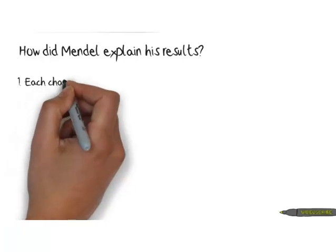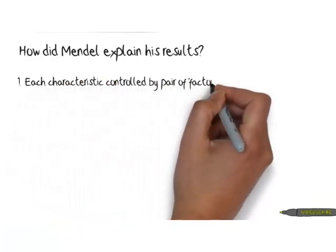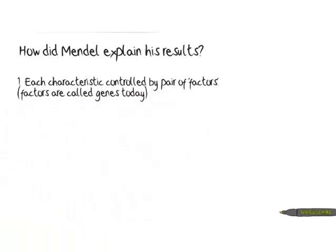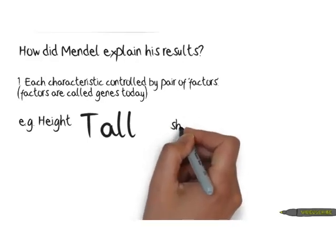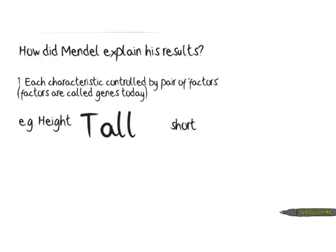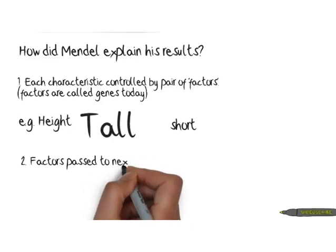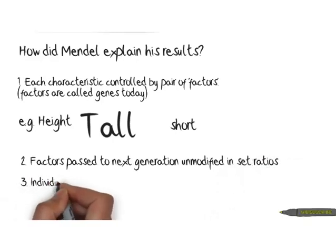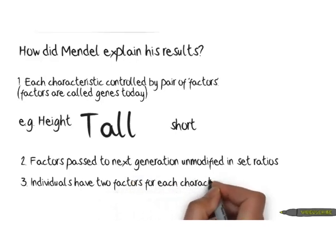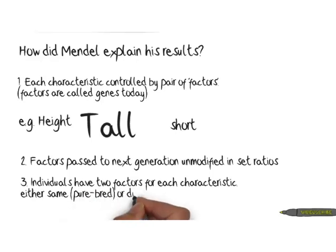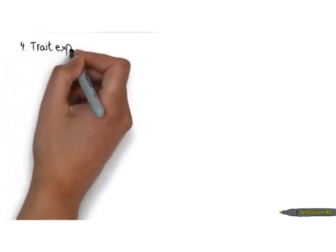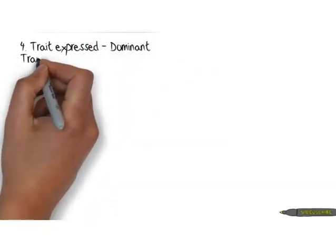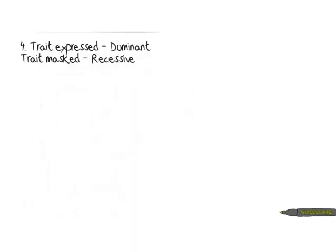So how did Mendel explain these results? One thing he found was that each characteristic was controlled by a pair of factors — we now call factors genes, but back then Mendel didn't understand anything about genetics so he called them factors. For height, the factors were tall or short. Factors are passed to the next generation unmodified, in set ratios. Individuals have two factors for each characteristic — they can be purebred with two tall factors, hybrid with one tall and one short, or purebred with two short factors. The trait expressed is the dominant trait; the one masked or hidden is the recessive trait.